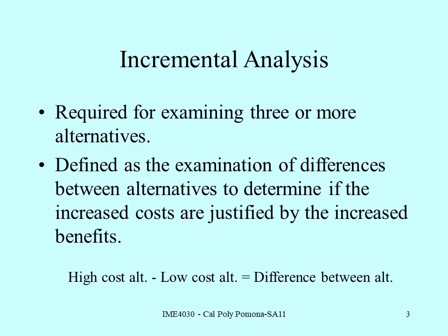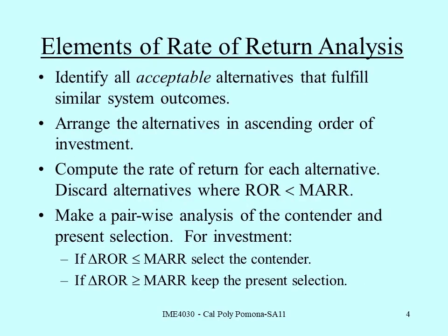We're going to be examining the differences between alternatives. We're going to look at pairings of alternatives where we'll take a higher cost alternative, subtract a lower cost alternative, and look at the difference between them. The elements of this rate of return analysis start with identifying all acceptable alternatives that fulfill our system deliverables. We arrange all alternatives into ascending order of investment, going from lowest first cost to highest first cost — ranking them by how much money we'd be spending in year zero, our upfront cost.